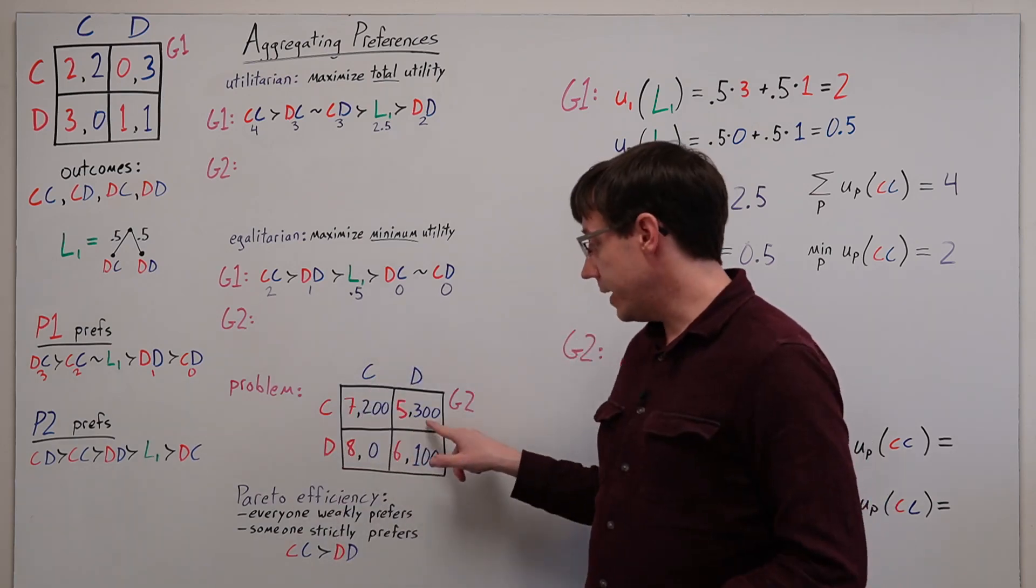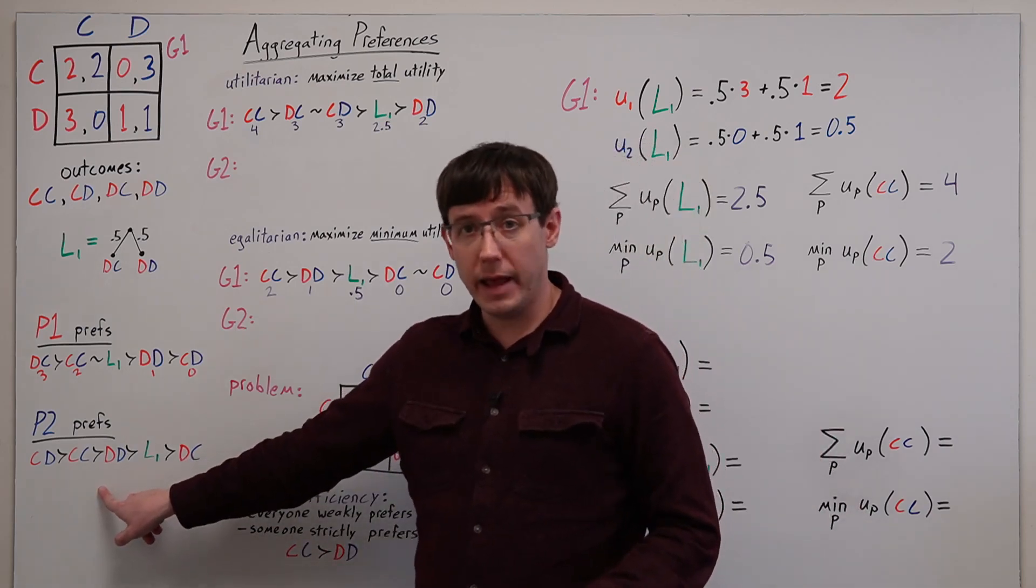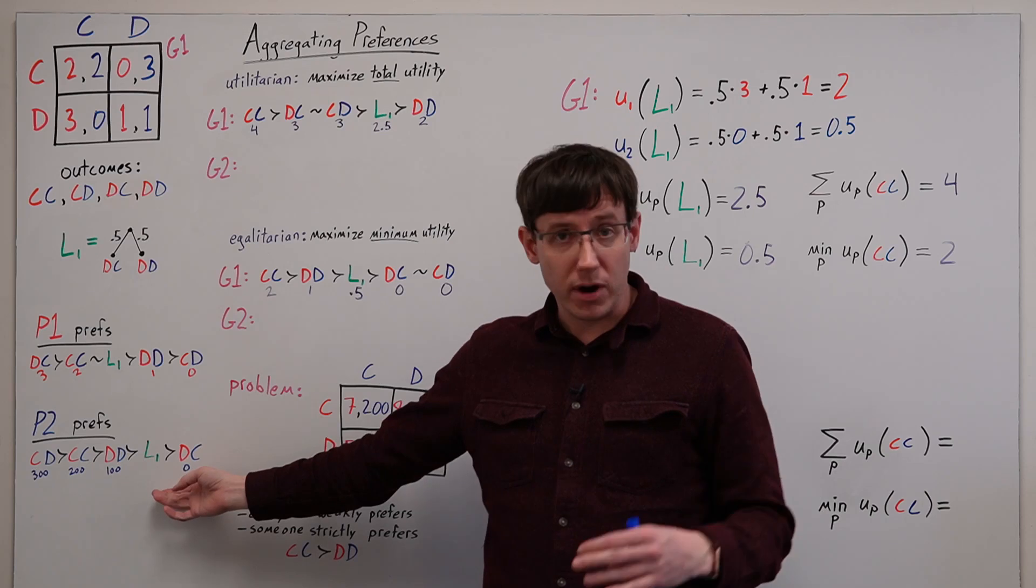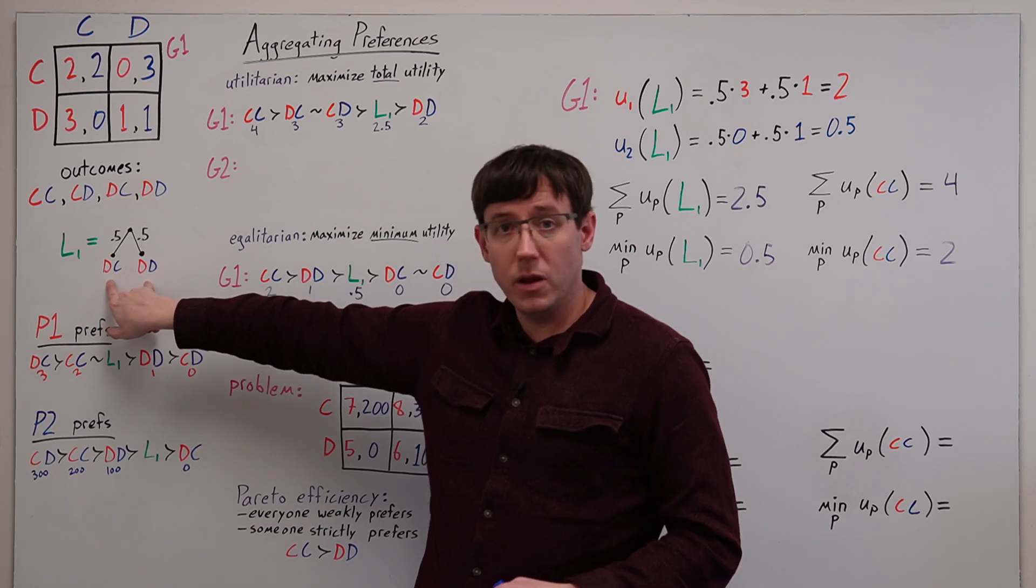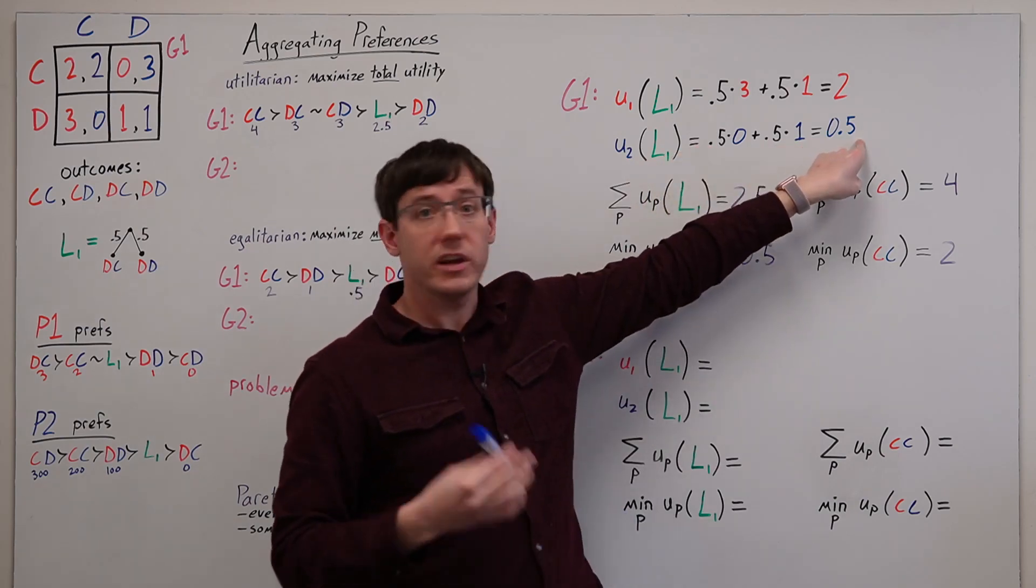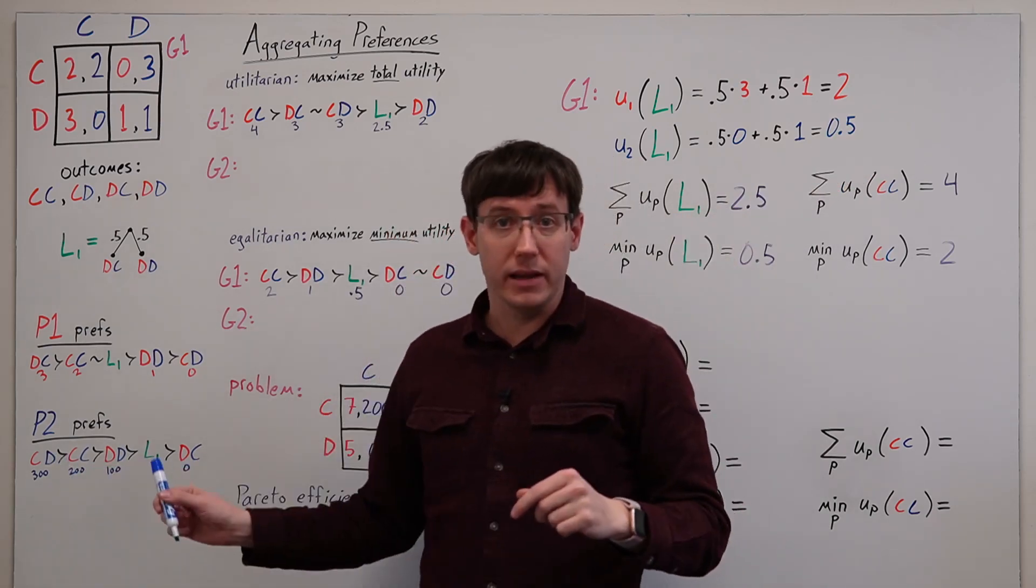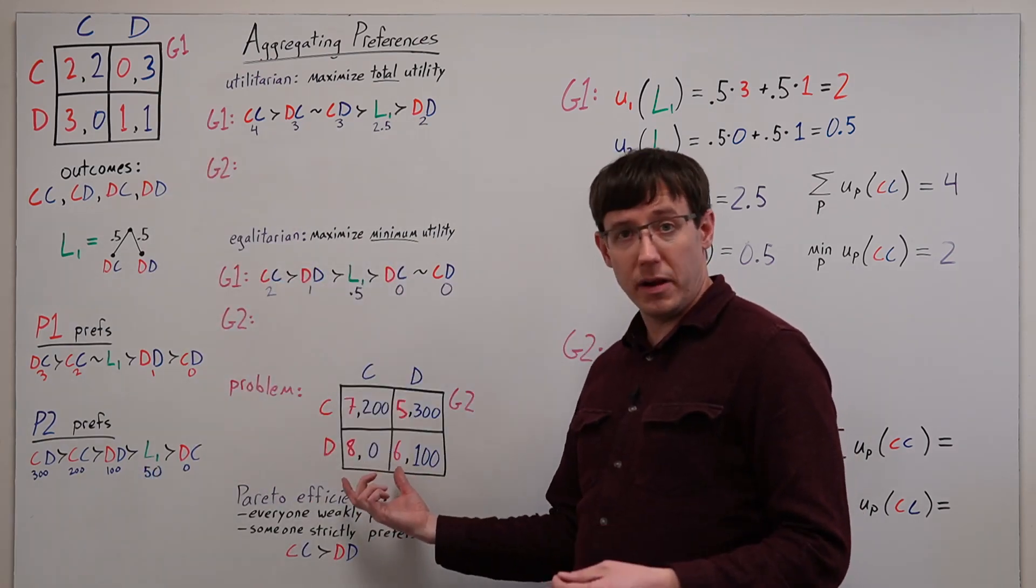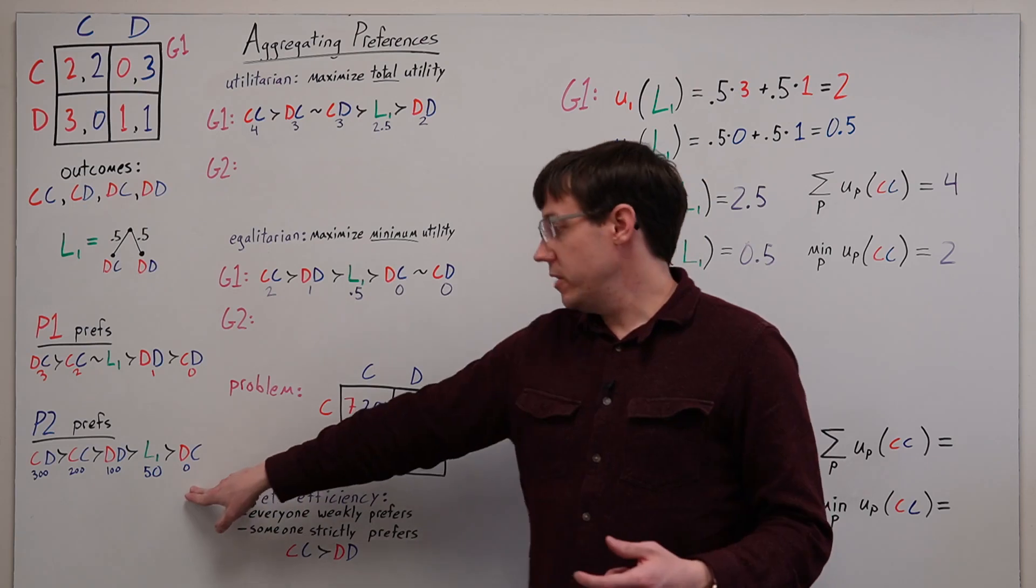For player 2, I've multiplied all of the utilities by 100. But if we look back at their preference ordering and compare with these new utilities, they still have exactly the same preferences over the outcomes. And likewise, for any lottery, we've multiplied all of those utilities by 100, and so we will have multiplied all the terms in the expected utility calculation by 100. And so the lottery will fall in exactly the same place in the preference ordering as it did before. So adding 5 to all of player 1's payoffs didn't change their preferences, and multiplying player 2's payoffs by 100 didn't change their preferences.